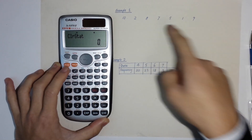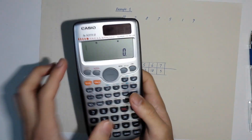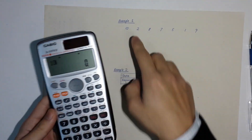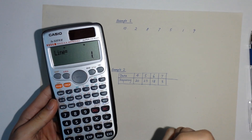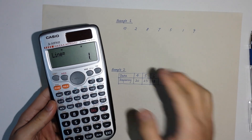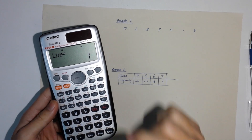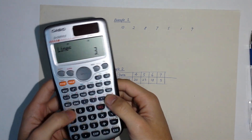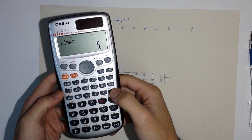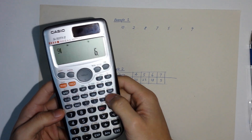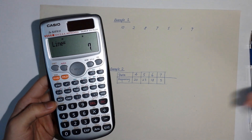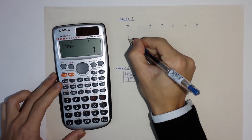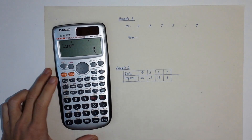Now enter all the data into the calculator. In this mode, press the first data value, then M+. For example: 10 M+, 2 M+, 8 M+, 7 M+, 5 M+, 1 M+, 9 M+. You have now entered all 7 data points.